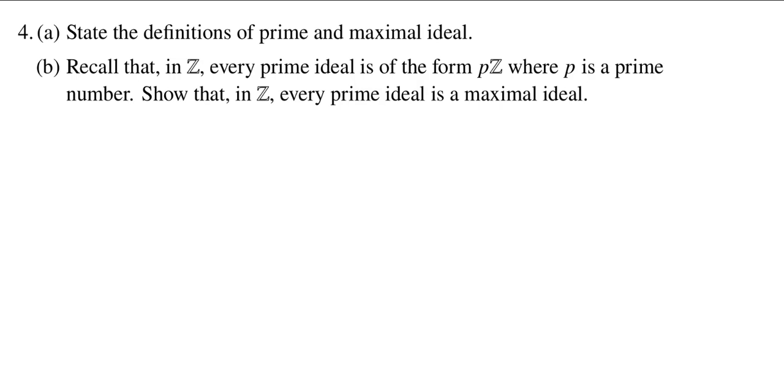Welcome back, everybody. This is our video solution to Problem 4 from the Fall 2021 Math 302 Final Exam here at Cal State Fullerton. This problem has two parts. First part, we're just stating some definitions. Prime and maximal ideal. This should be pretty easy.